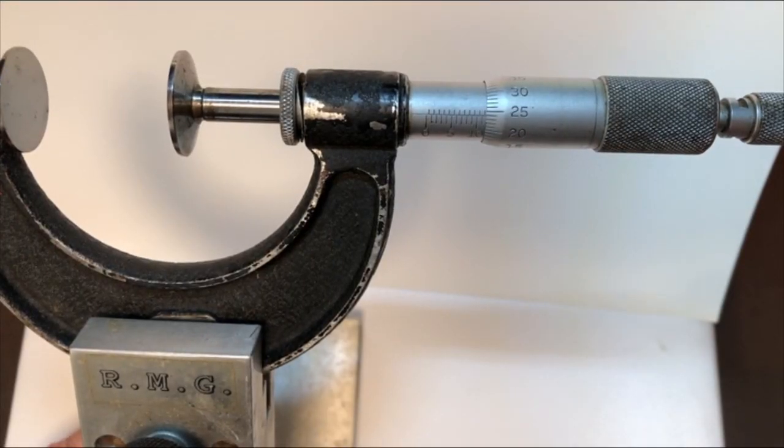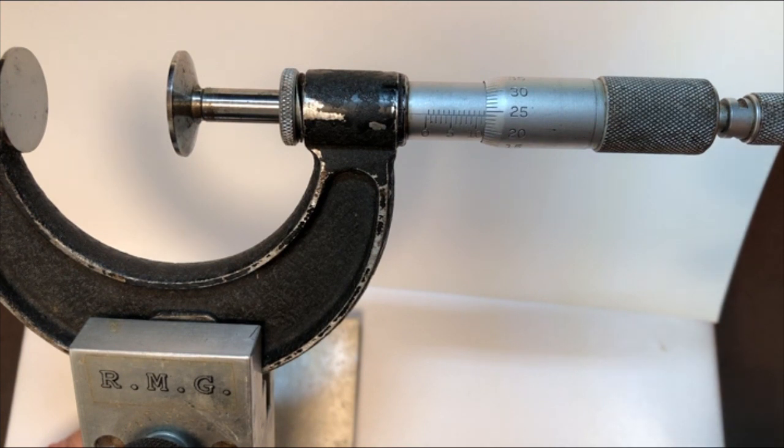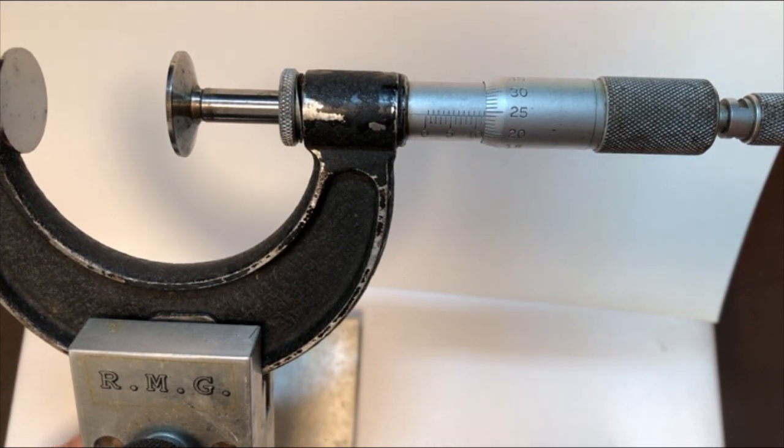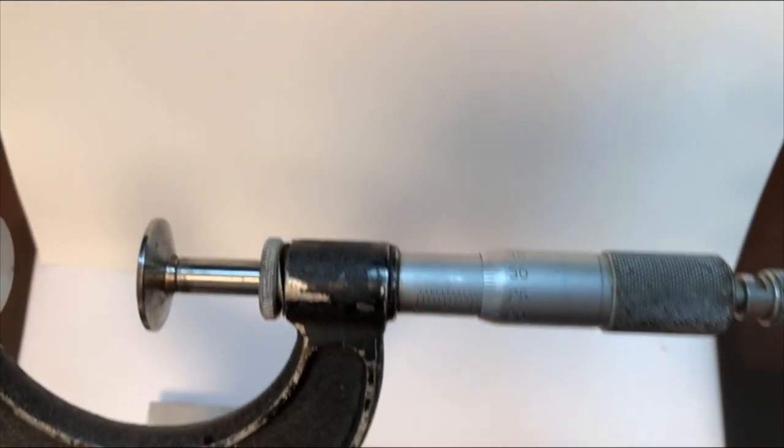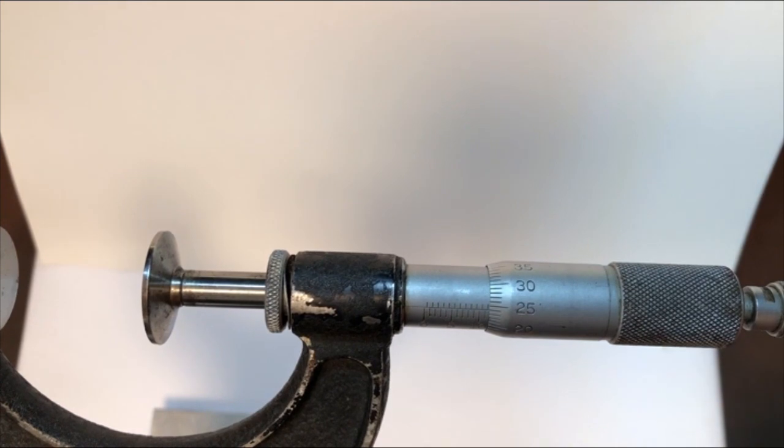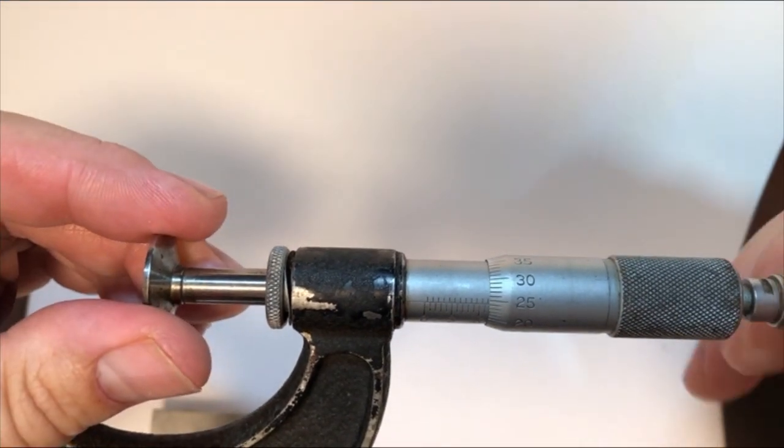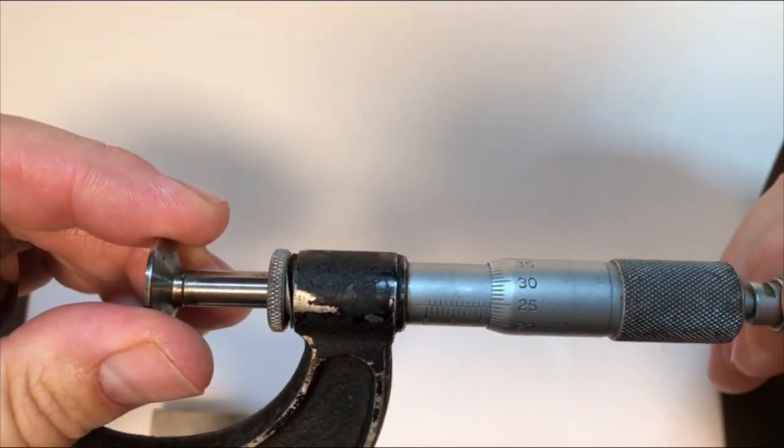So what we have here is a Metric Flange Mic, 20mm to 45mm. Let's look at the parts. What we have here is our ratchet stop. I also like to call it the cowbell.